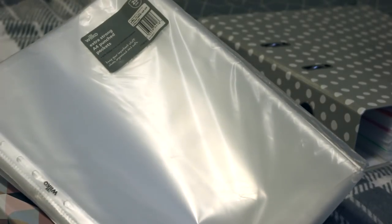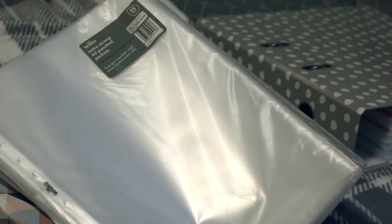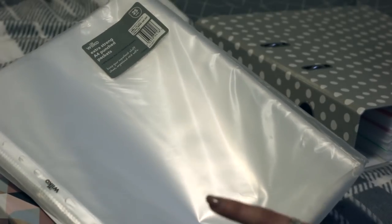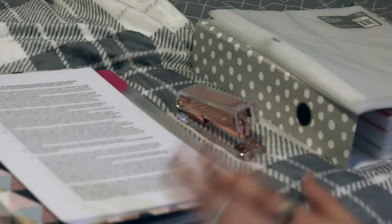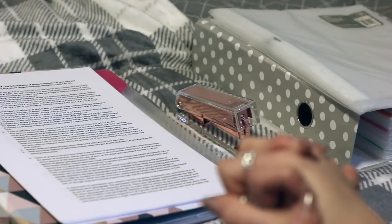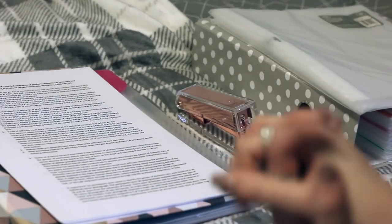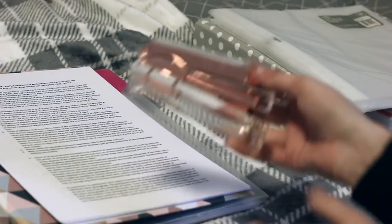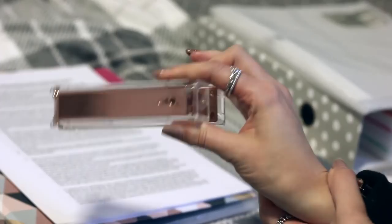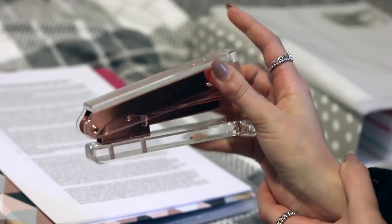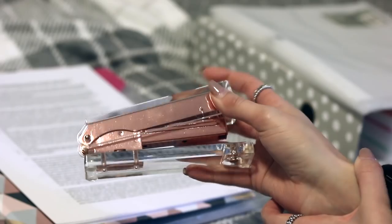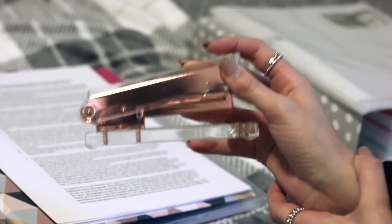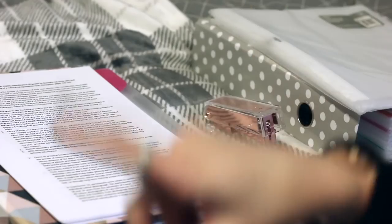And I use these ones from Wilco. They're the A4 Extra Strong Punch Pockets. I absolutely love these because they are really shiny. I don't know if anybody else has this thing with plastic wallets, but when they're shiny it just makes it so much better. I also have my stapler. I can't remember which brand it's from, but I have the Repesco Rose Gold Staples. I just got this off Amazon. It's amazing, I'm obsessed with it.